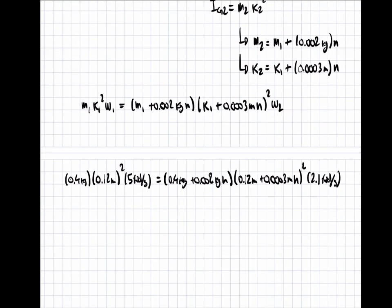This is our equation. And using a solver, we get that n equals 102. So we need 102 paper clips to achieve this angular velocity of 2.1 radians per second. And that is our final answer.